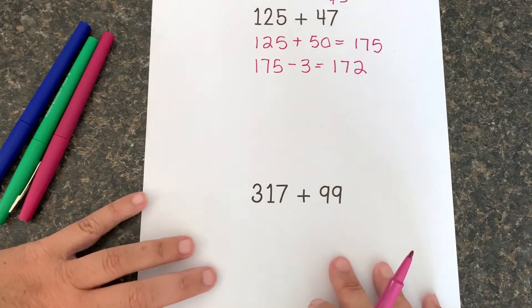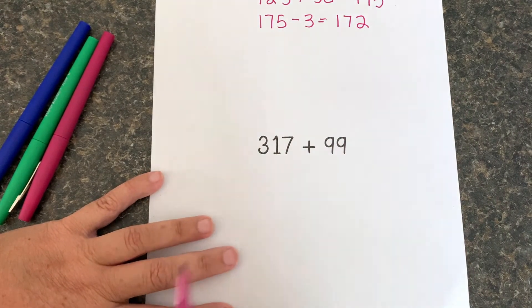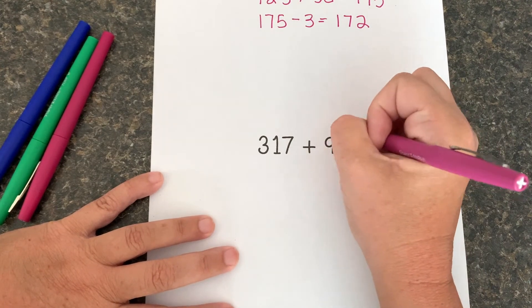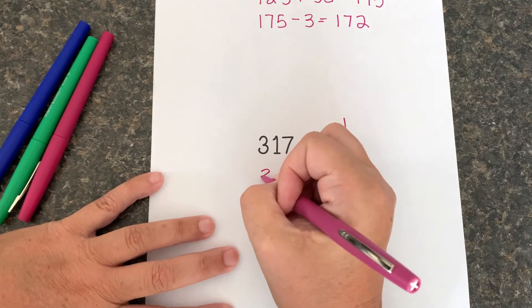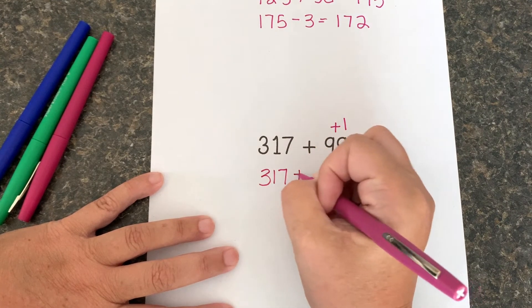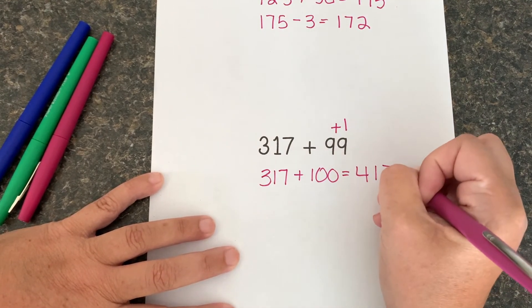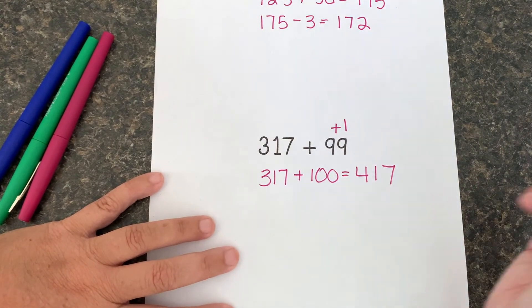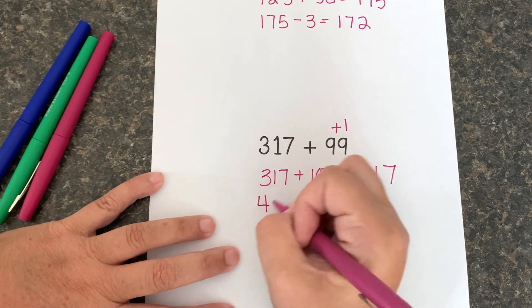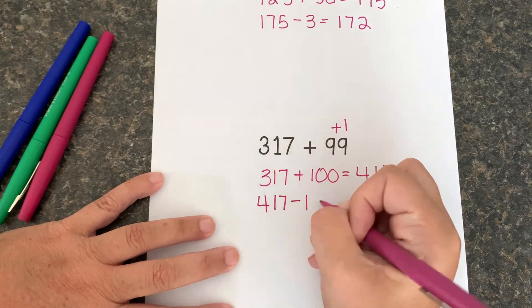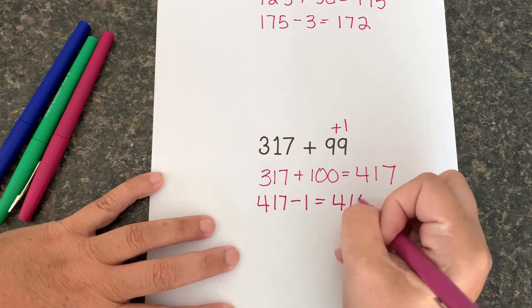And for the last one, I'm very close to 100 here. So I'm gonna add 1 to 99 to make it 100. 317 plus 100, and that becomes 417. But then I have to adjust. 417 take away 1 gives me 416.